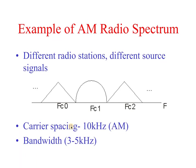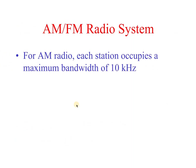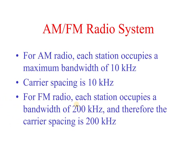Different radio stations carry different source signals — fc1, fc2, and so on — each carrying different frequency bands originated by different transmitters. For AM, carrier spacing between two channels is equal to 10 kHz and bandwidth is 3 to 5 kHz, so each AM station occupies a maximum bandwidth of 10 kHz. For FM radio, each station occupies a bandwidth of 200 kHz and therefore the carrier spacing is also 200 kHz.